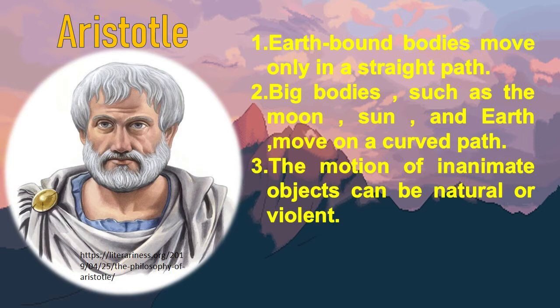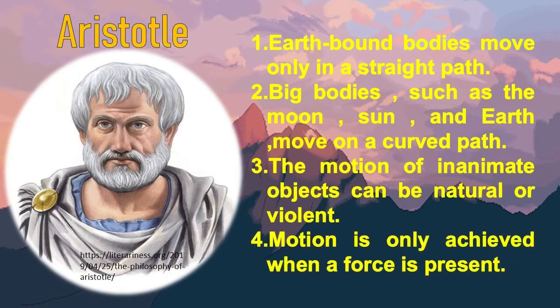Natural motion is being at rest or moving at constant velocity, while violent motion occurs when the body changes speed or direction. And lastly, motion is only achieved when a force is present. So, without force, the body automatically stops.